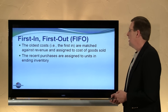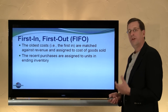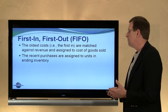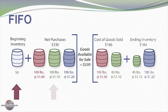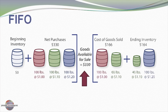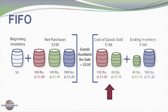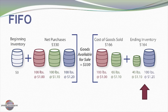Looking at first-in, first-out (FIFO): the oldest costs — the first in — are matched against revenue and assigned to cost of goods sold first, while the most recent purchases are assigned to ending inventory. In our example, we had zero beginning inventory and three purchases of barrels of nails: 100 pounds at $1.00, 100 pounds at $1.10, and 100 pounds at $1.20, for a total goods available for sale of $330. We sold 160 pounds. Under FIFO, the red barrel ($1.00) sold first, then 60 pounds from the green barrel ($1.10), giving cost of goods sold of $166. The remaining 40 pounds from the green barrel and the full 100-pound blue barrel were assigned to ending inventory.